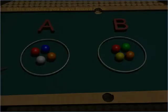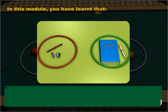In this module, you have learned that Union of two sets A and B is defined as a set that contains no other element except all the elements of set A and set B. The elements common to the sets that are combined are included only once in the combined set.